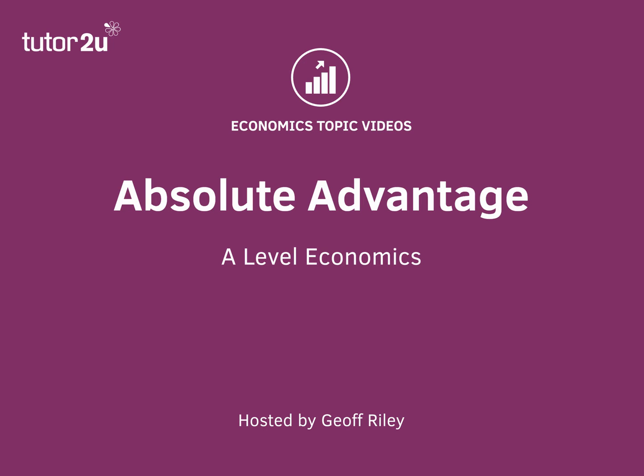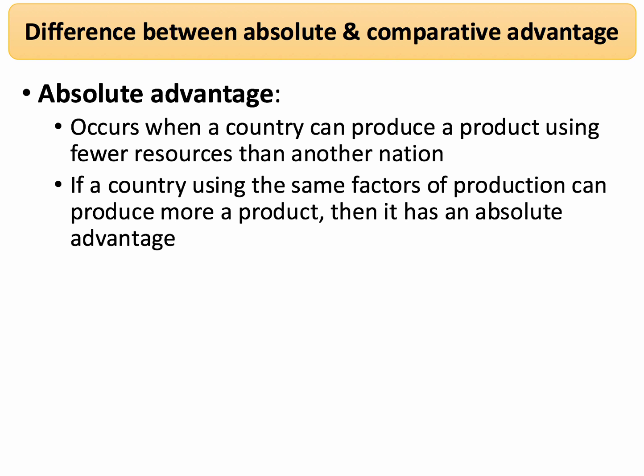Hi there, here's a quick video looking at absolute advantage and making a comparison with comparative advantage. Absolute advantage happens when a country can produce a product using fewer resources than another nation — it's just more efficient in absolute terms, and if it can do that, we say it has an absolute advantage.